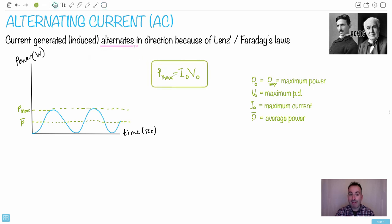And then if we want the average power, what we'll do is we'll take the maximum, the maximum current and the maximum potential difference, and we'll take half of that because it's halfway there. So it's still I0 V0, except I'll put a half in front.